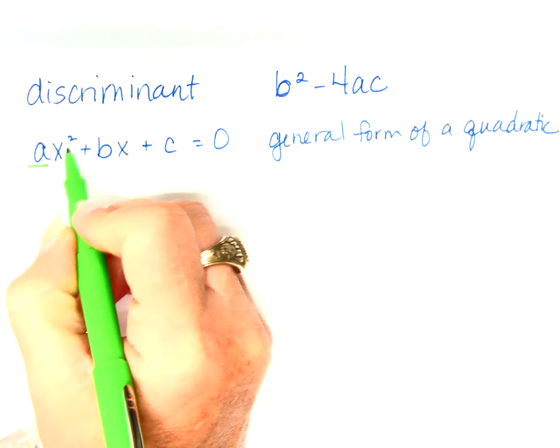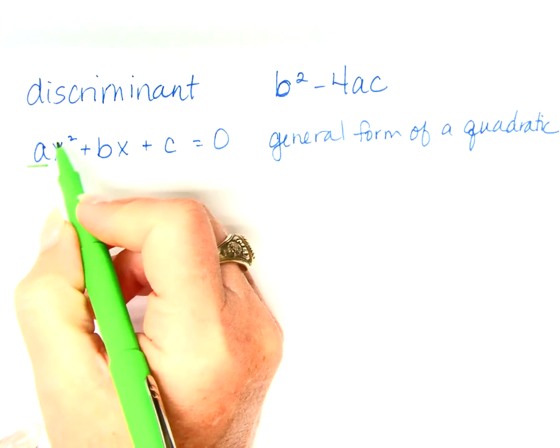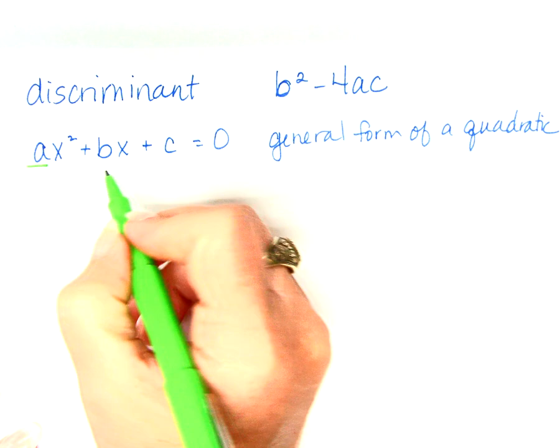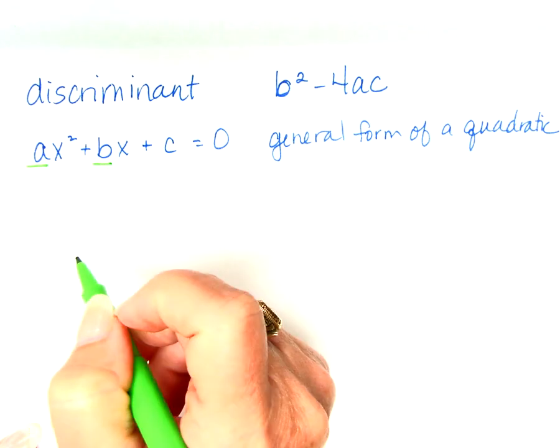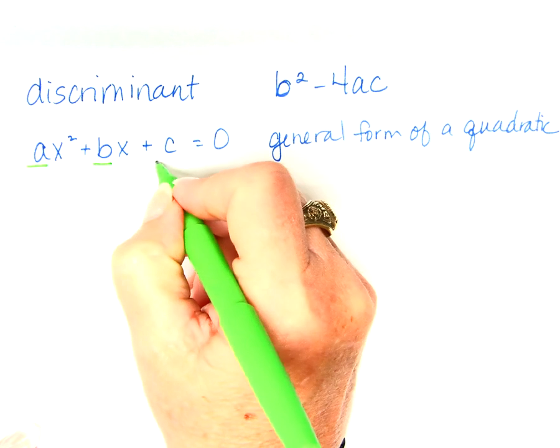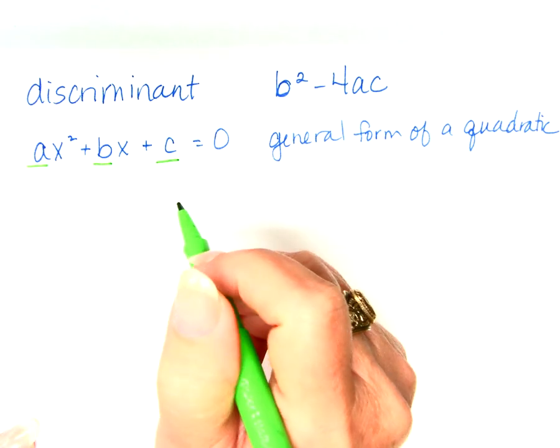A is the term where? Beside the x squared. B is the term where? Beside the x. And C is which term? The constant.